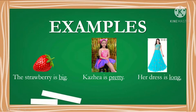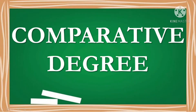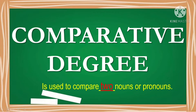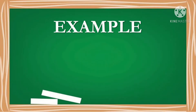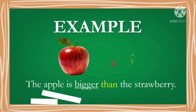Another example: her dress is long. The adjective long describes the dress. Next, comparative degree is used to compare two nouns or pronouns. We add -er to the adjective to show comparison, and the word 'than' is placed after the adjective. For example, the apple is bigger than the strawberry — we added -er to big and placed 'than' after the adjective.